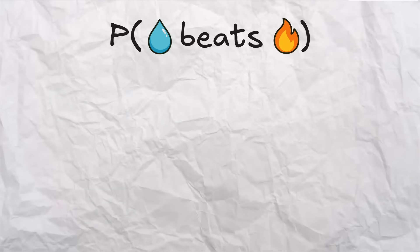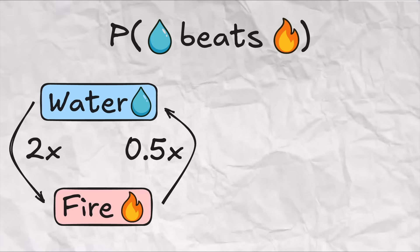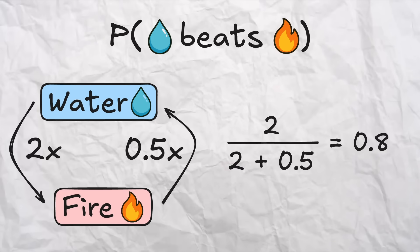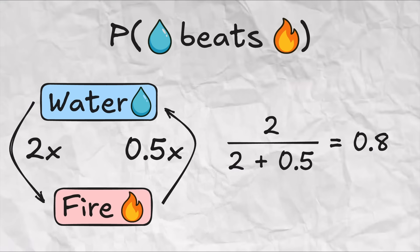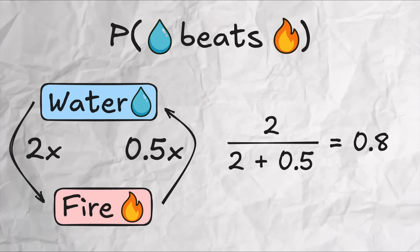Take two types like water and fire. Water is super effective against fire, and also resists fire. So to come up with a reasonable definition of probability water beats fire, we can divide two by the sum of two and 0.5, which gives us 0.8. And by symmetry the probability that fire beats water would be 0.2.